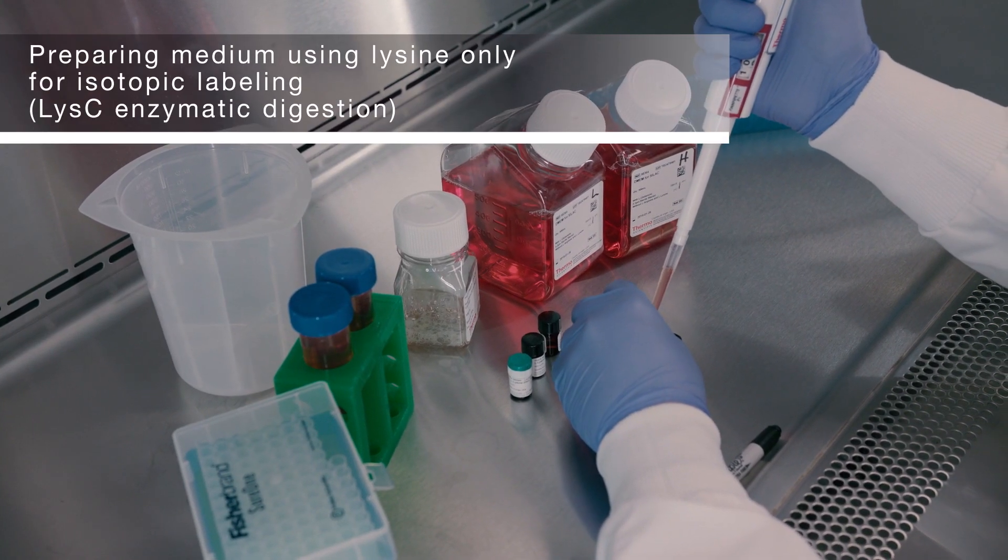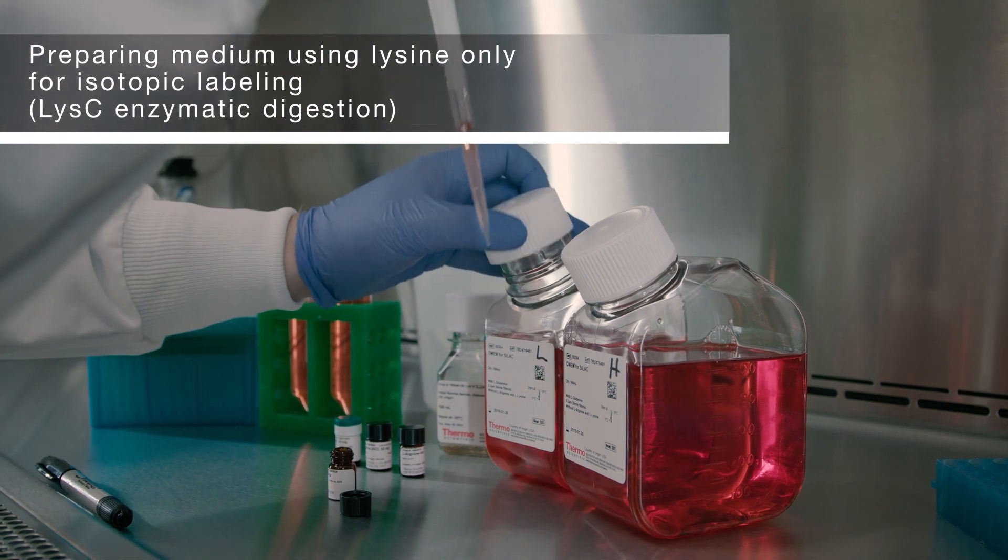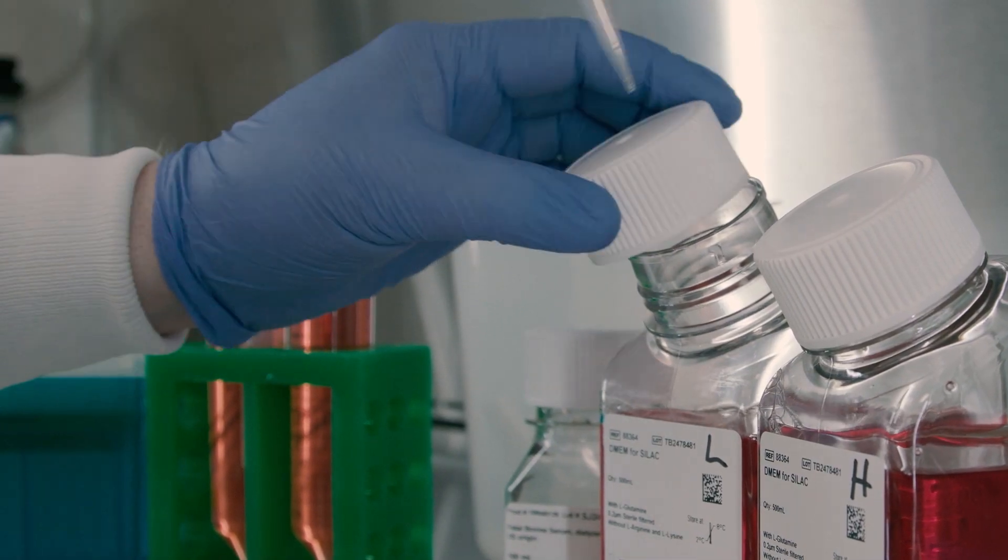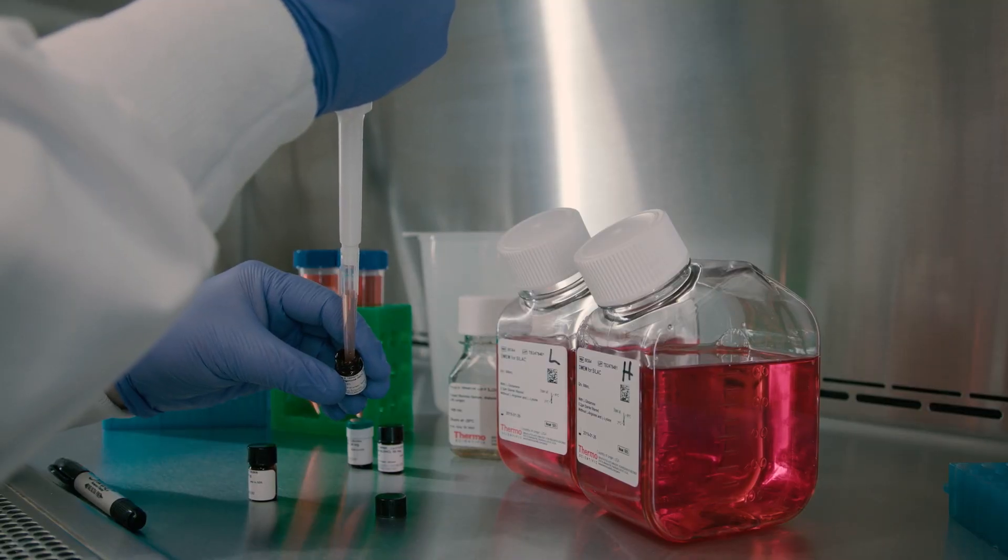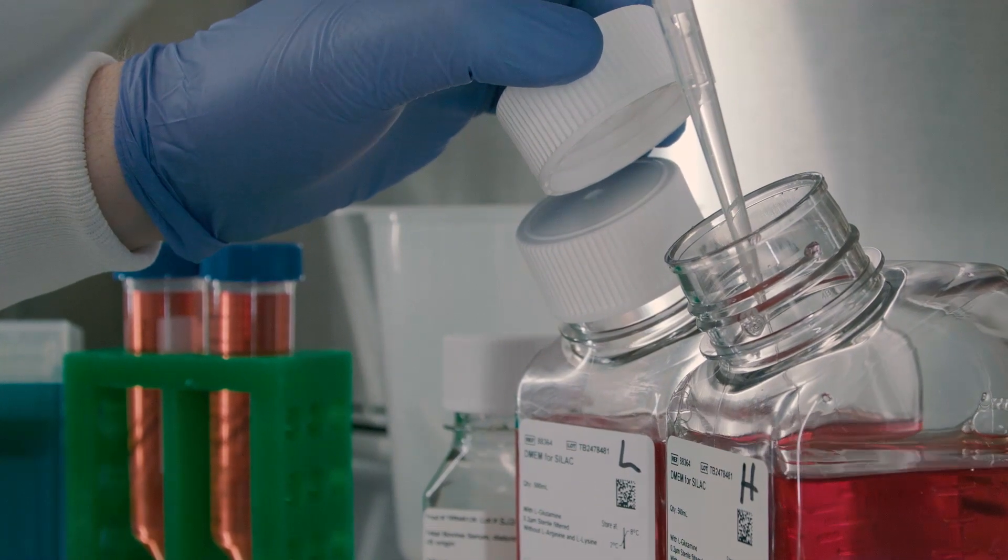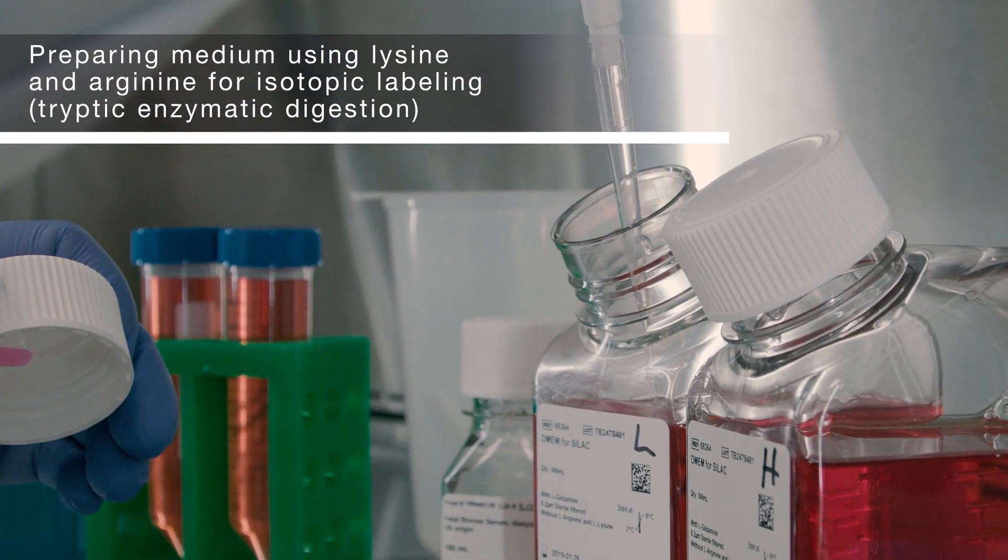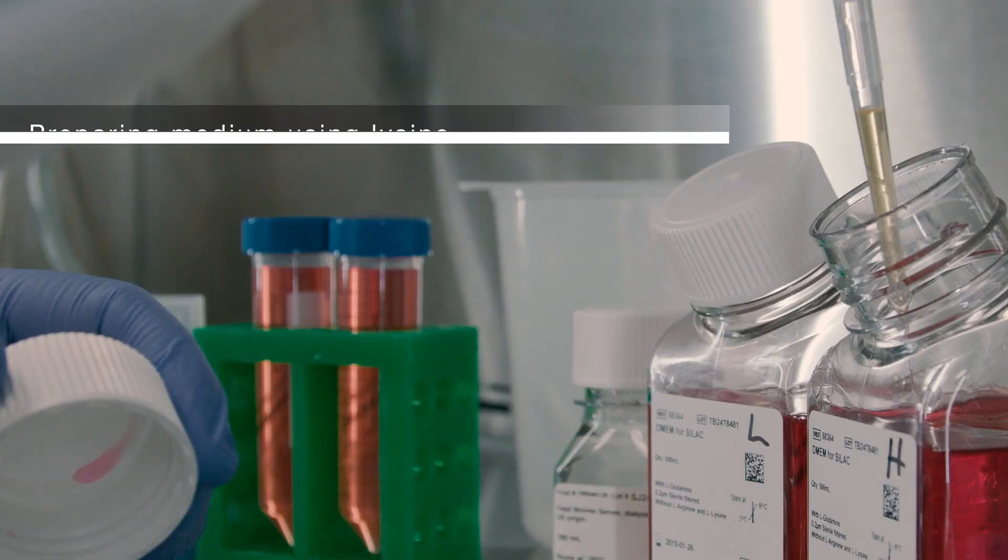For experiments using only lysine for isotopic labeling and subsequent lysine enzymatic digestion, supplement each bottle by adding 50 milligrams of the dissolved light arginine. Next, add 50 milligrams of dissolved light lysine to one bottle and 50 milligrams of dissolved heavy lysine to the other.